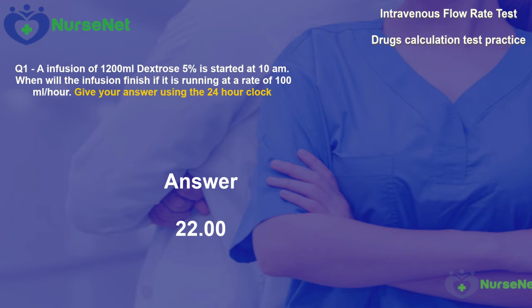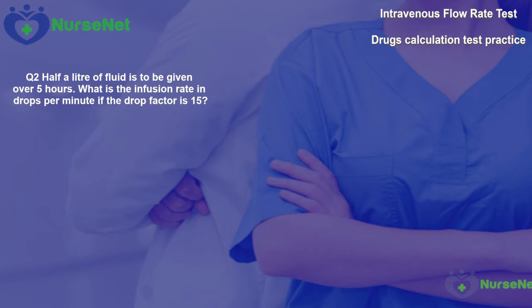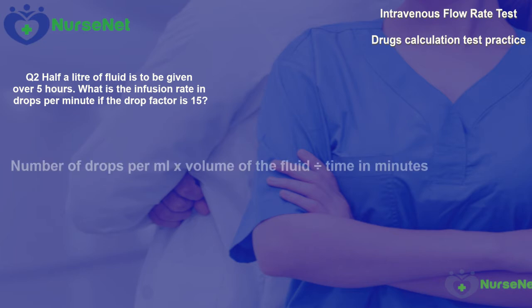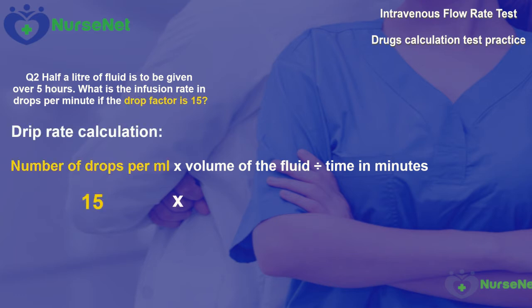Question 2. Half a litre of fluid is to be given over 5 hours. What is the infusion rate in drops per minute if the drop factor is 15? We should identify that we can use the drip rate formula: number of drops per millilitre multiplied by the volume of the fluid, divided by the time in minutes. We've been given 15 drops per millilitre. The total volume is half a litre, which we convert to 500 millilitres.